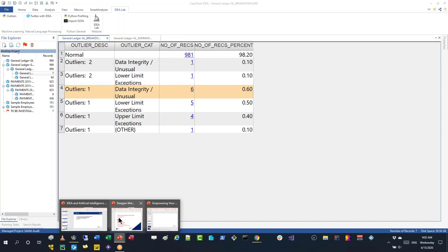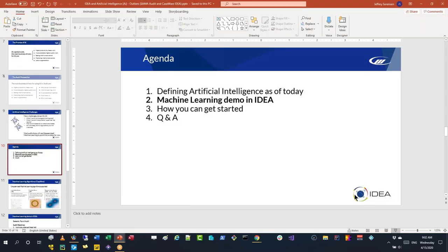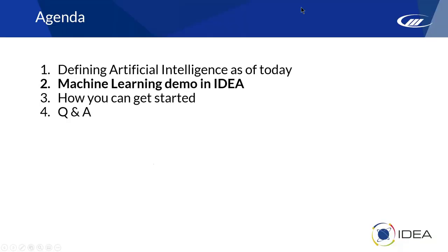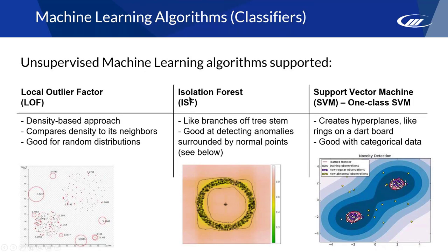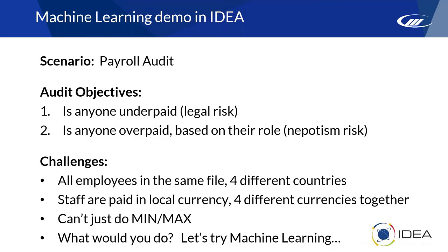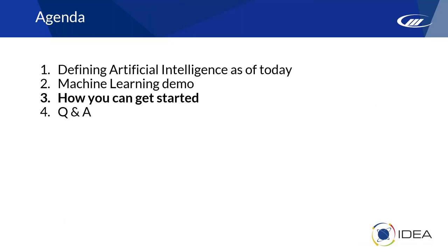That wraps up the demos. Q&A time — please put questions in the chat box. First question from Rajesh: how do we download the outlier app from IDEA Lab? In IDEA 11, which maintained clients in India can already access, you go to IDEA Lab, click the download button, and you can browse various functions including machine learning apps like pandas profiling and Outliers. Just click download, learn more, and you can start right away.